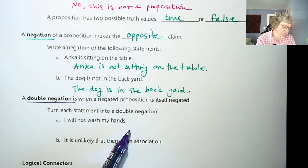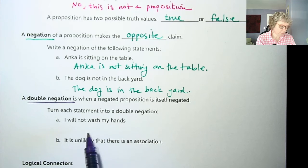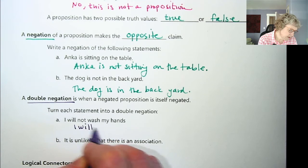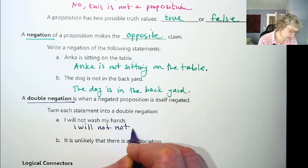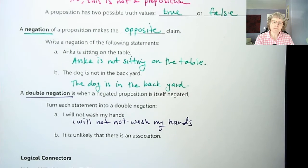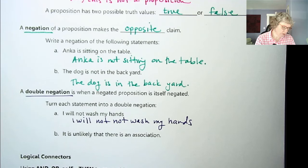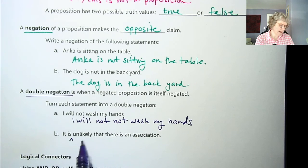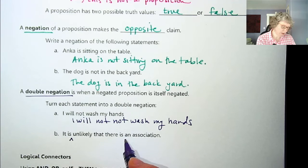So let's turn each of these into a double negation. I will not wash my hands. So now if I could turn that into the reverse by saying I will wash my hands, but then that's not a double negative. So I'm going to say I will not not wash my hands. And there can be many ways to say these sometimes. In this one, it says the original is it is unlikely that there is an association. So I could say it is not unlikely. And then that's like two negatives, right? Because it's unlikely. So not unlikely.